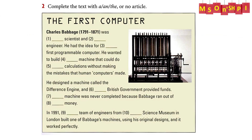Let's read the text together and complete with the definite article, indefinite articles, or no article. Charles Babbage, 1791 to 1871, was a scientist and an engineer. He had the idea for the first programmable computer. He wanted to build a machine that could do calculations without making the mistakes that human computers made. He designed a machine called the Difference Engine, and the British government provided funds. The machine was never completed because Babbage ran out of money. In 1991, a team of engineers from the Science Museum in London built one of Babbage's machines using his original designs, and it worked perfectly.